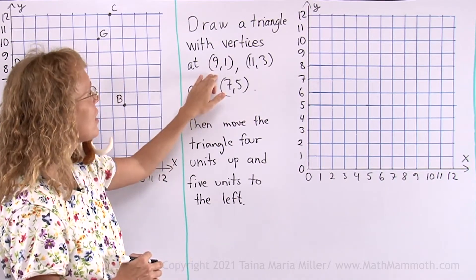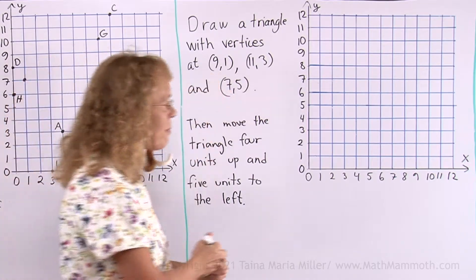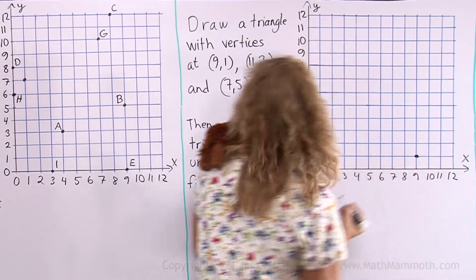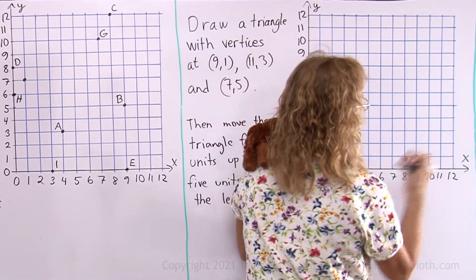First vertex is at 9, 1. I go on the x-axis 9 units, and then 1 unit up. Over here to 9, and then 1 unit up. Then 11, 3. Go on the x-axis to 11, then 3 units up.